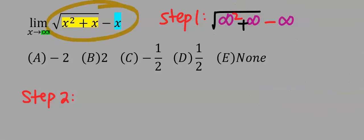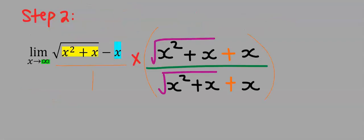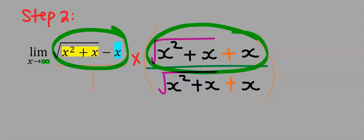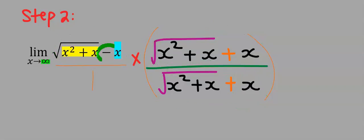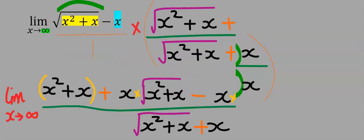We rationalize by conjugate — that is, I will multiply this function by the numerator and also by the denominator. However, the arithmetic operator separating them will change.